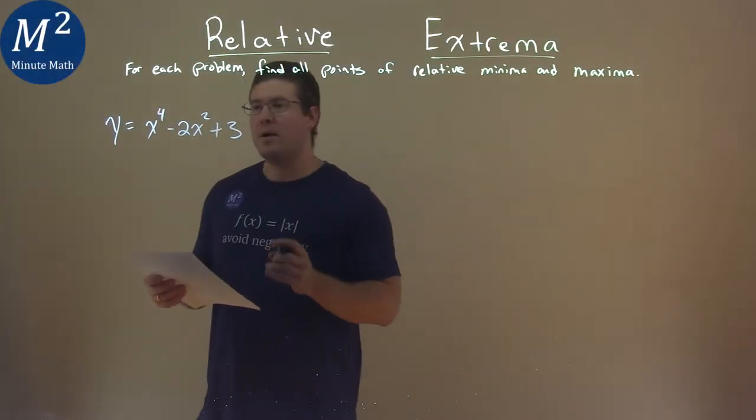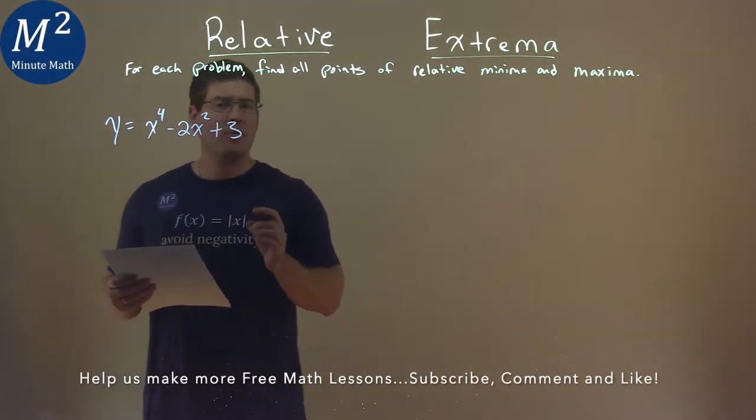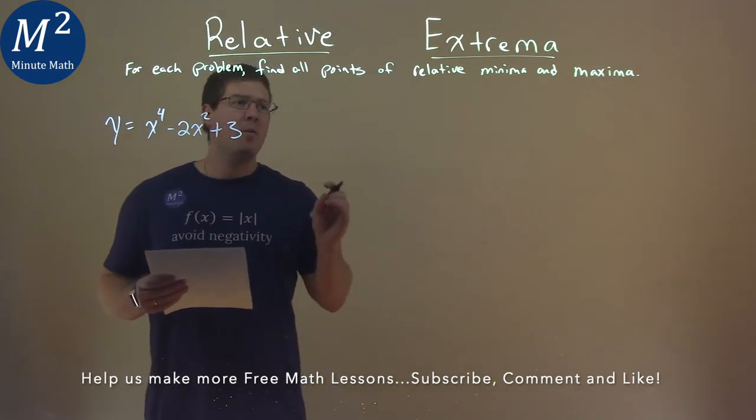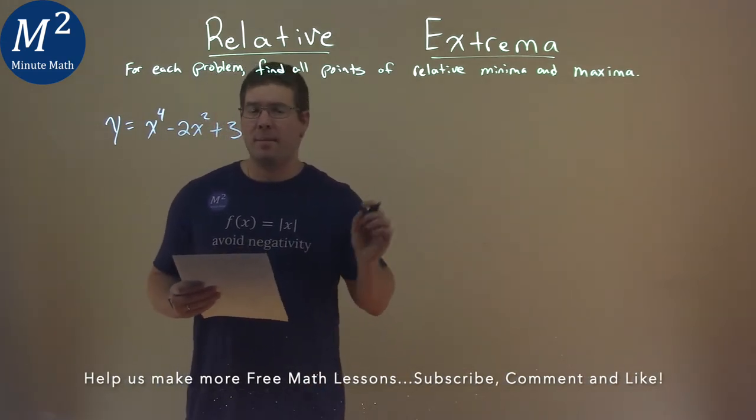We're given this problem right here: y equals x to the fourth minus 2x squared plus 3, and we want to find all the points of relative minimum and maximum.